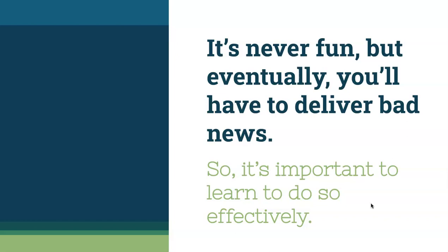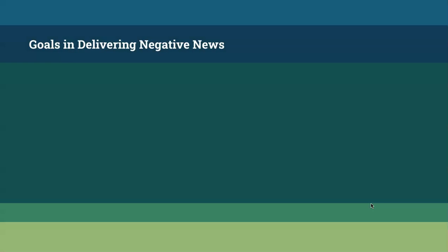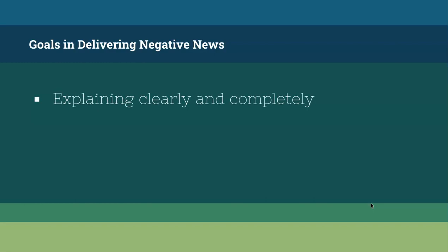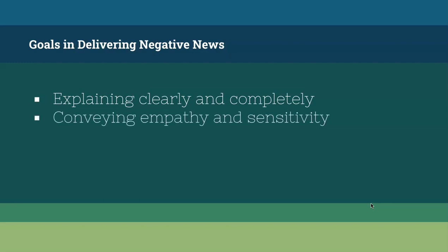We're going to talk through some strategies and advice for composing messages that have bad news. Your goals in delivering negative news: first, explaining clearly and completely — what the negative news is, laying it out for your receiver, telling them exactly what happened, giving them as much information as you're able to. Second, conveying empathy and sensitivity, showing that you know the way this impacts them and that you really feel for them.